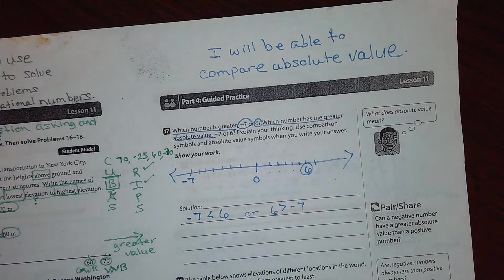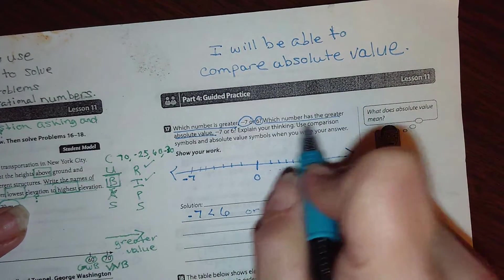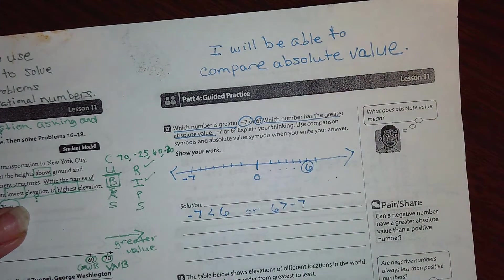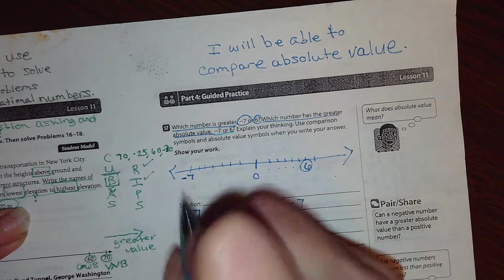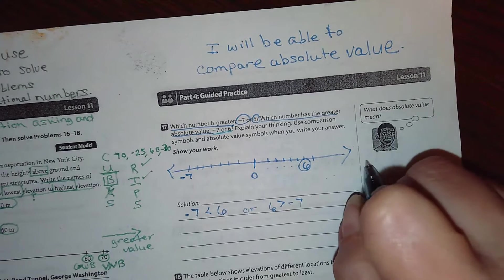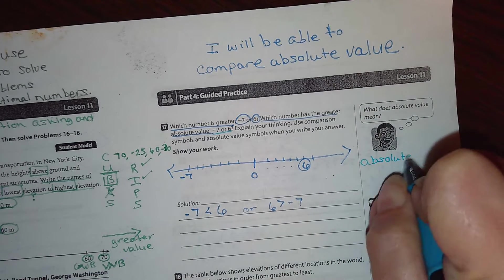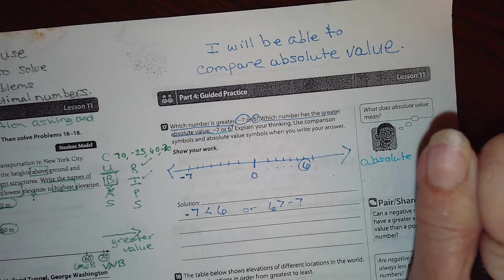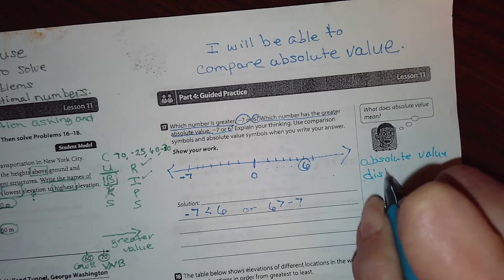This is not erasable, but it was close. So now it's asking which number has the greatest absolute value, negative seven or six, right? Now, what is absolute value? Absolute value